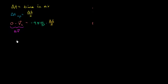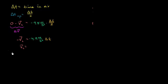So we get negative the initial velocity equals — dividing 9.8 by 2 gives 4.9 meters per second squared — times delta t, our total time in the air. Multiplying both sides by negative one, our initial velocity is equal to 4.9 meters per second squared times the total time in the air. Equivalently, it's 9.8 meters per second squared times half the time in the air — either gives the same calculation.